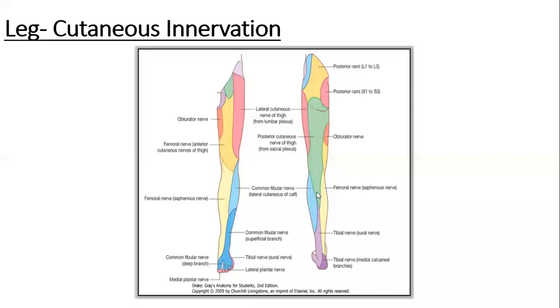Then over the posterior aspect of the leg in the center and upper part of the posterior aspect of the leg we have posterior cutaneous nerve of thigh, branch of sacral plexus.